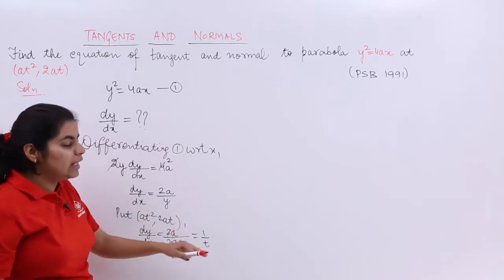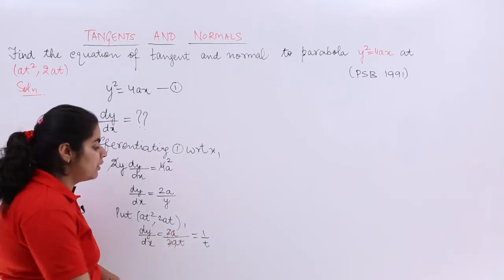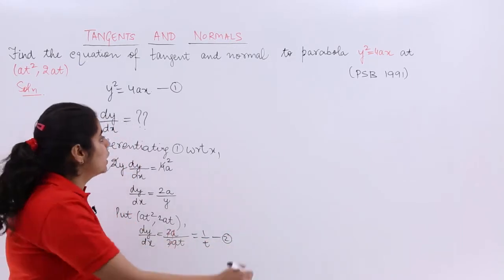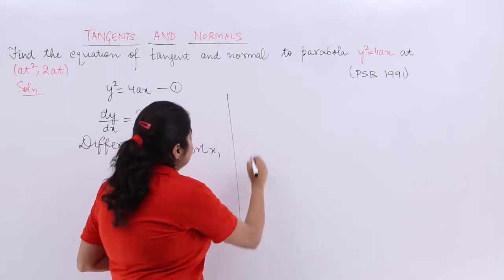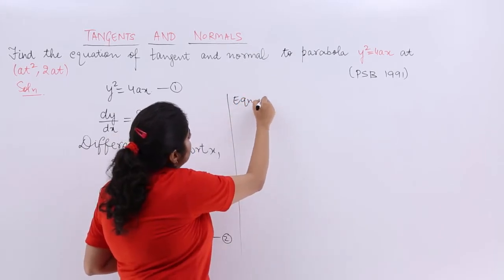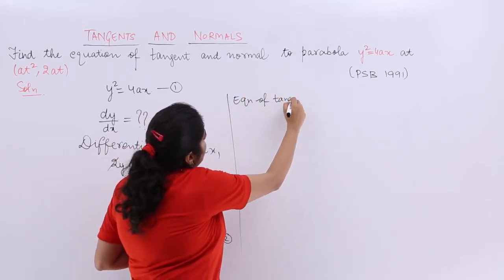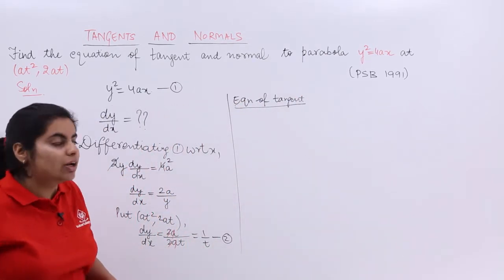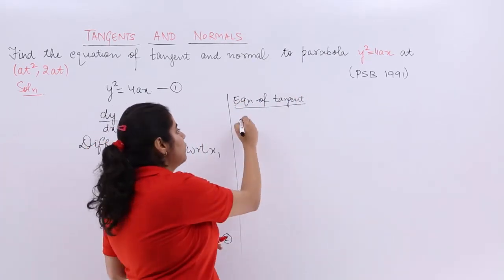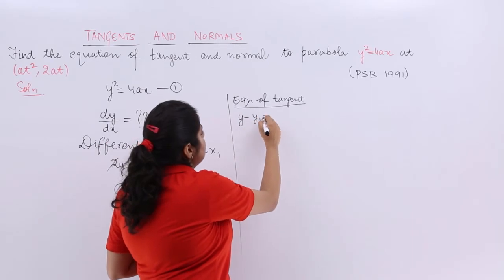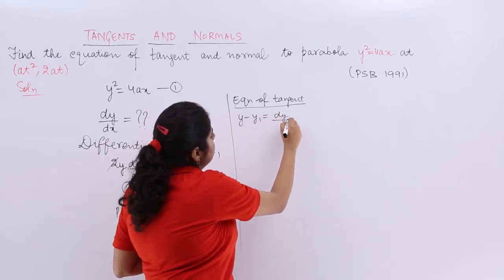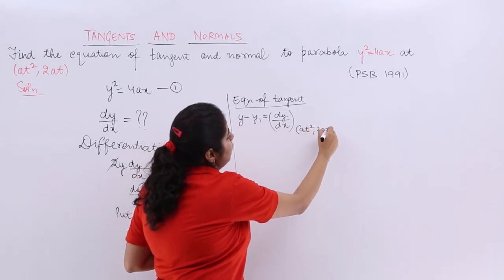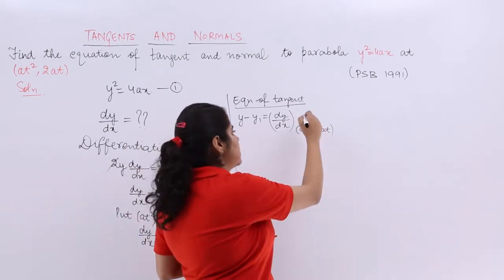When the slope of the tangent is found, we can find the equation. Let's call the slope result equation number 2. The formula for the equation of the tangent is y − y₁ = m(x − x₁), where m = dy/dx = 1/t at the point (at², 2at).